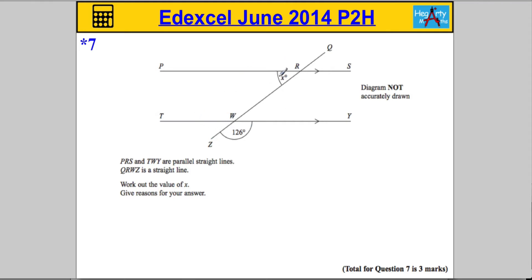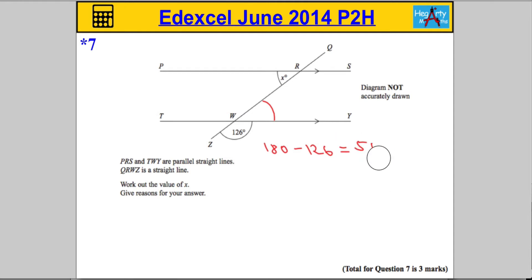The first thing I tend to do is see if I can work out what x is by filling in information onto the diagram, then give my answers a little bit later. I can see that this angle here is 126 and it sits on a straight line, which means I can work out the adjacent angle by doing 180 subtract 126, which gives me 54. Let's write that down and fill it into the diagram: 54.